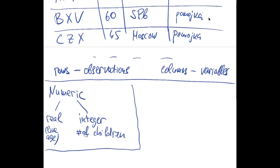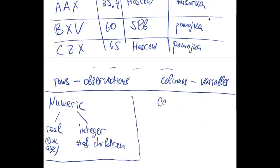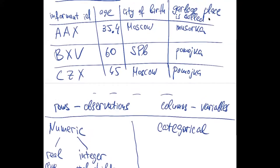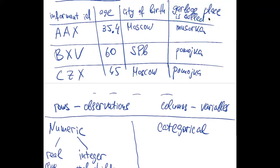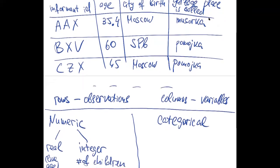Another type of variable we will consider is categorical variables. We actually have some categorical variables in our example table: city of birth and the variable denoting how a person calls the garbage place. These variables are categorical — they take one of usually a finite set of possible values.